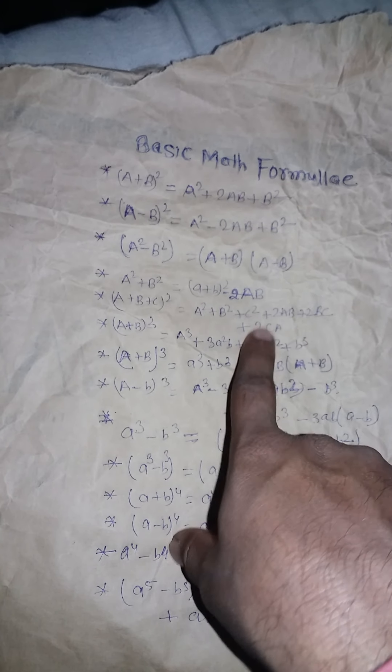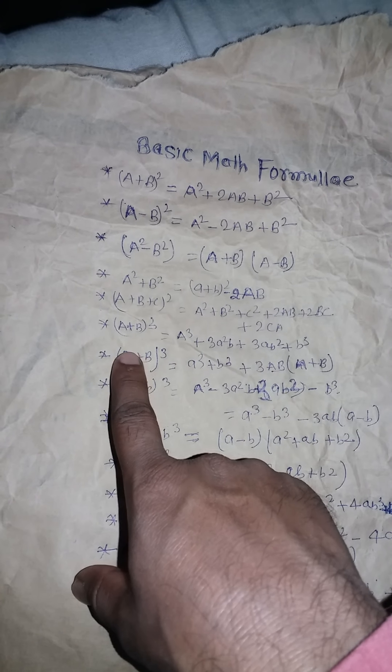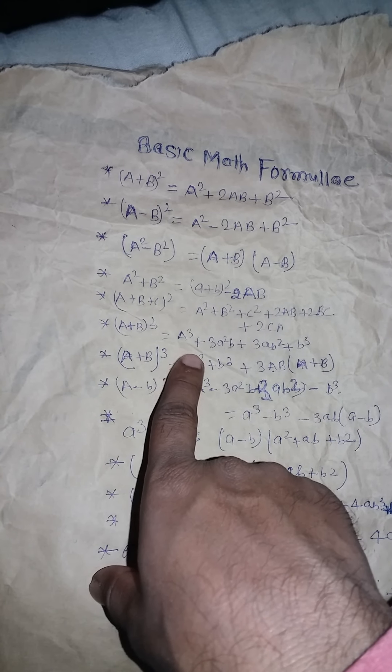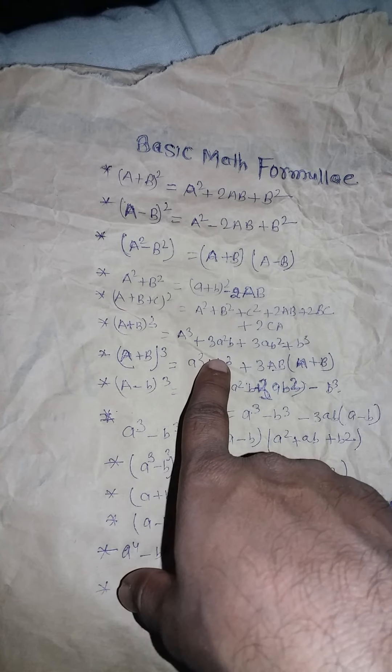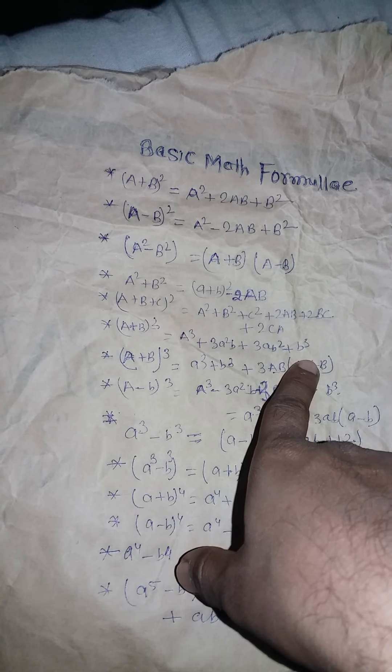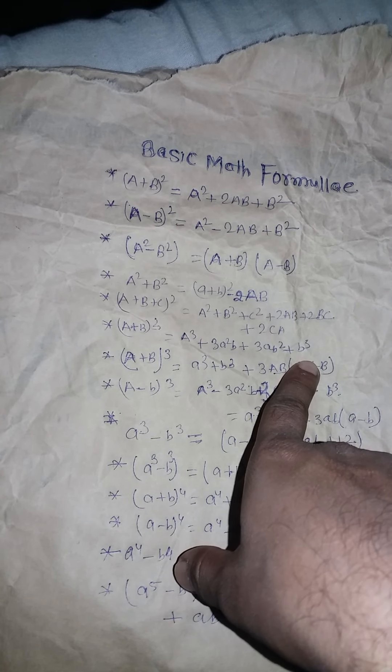Here, next one: a plus b whole cube is equal to a cube plus 3a square b plus 3ab square plus b cube.